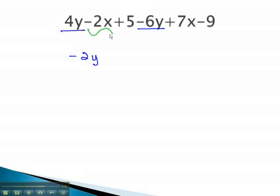Here, we have a negative 2x. The negative 2x can be combined with the like term, 7x. Negative 2 plus 7 is positive 5x.